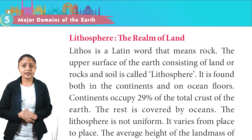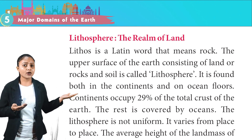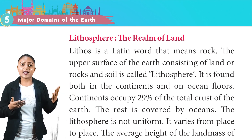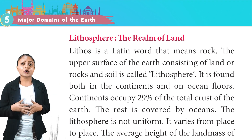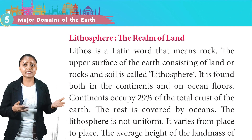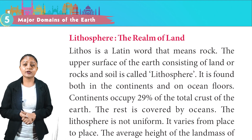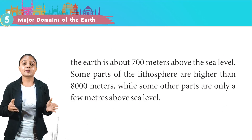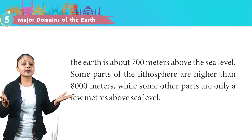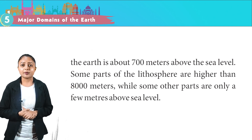Lithos is a Latin word that means rock. The upper surface of the Earth consisting of land or rocks and soil is called lithosphere. It is found both in the continents and on the ocean floor. Continents occupy 29% of the total crust of the Earth. The rest is covered by ocean. The lithosphere is not uniform; it varies from place to place. The average height of the landmass of the Earth is about 700 meters above sea level. Some parts are higher than 8000 meters while some others are only a few meters above sea level.